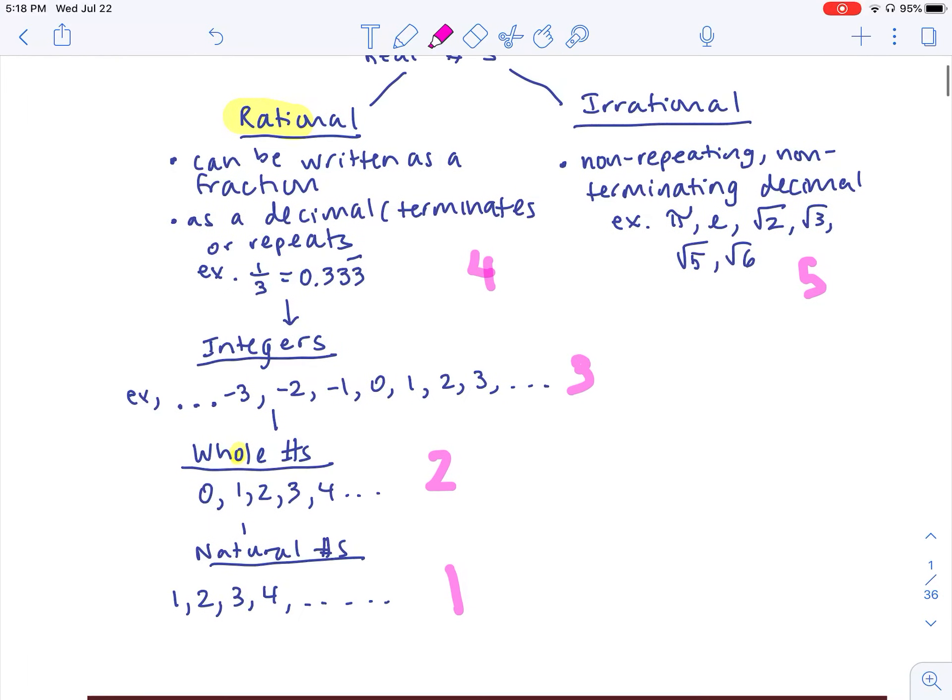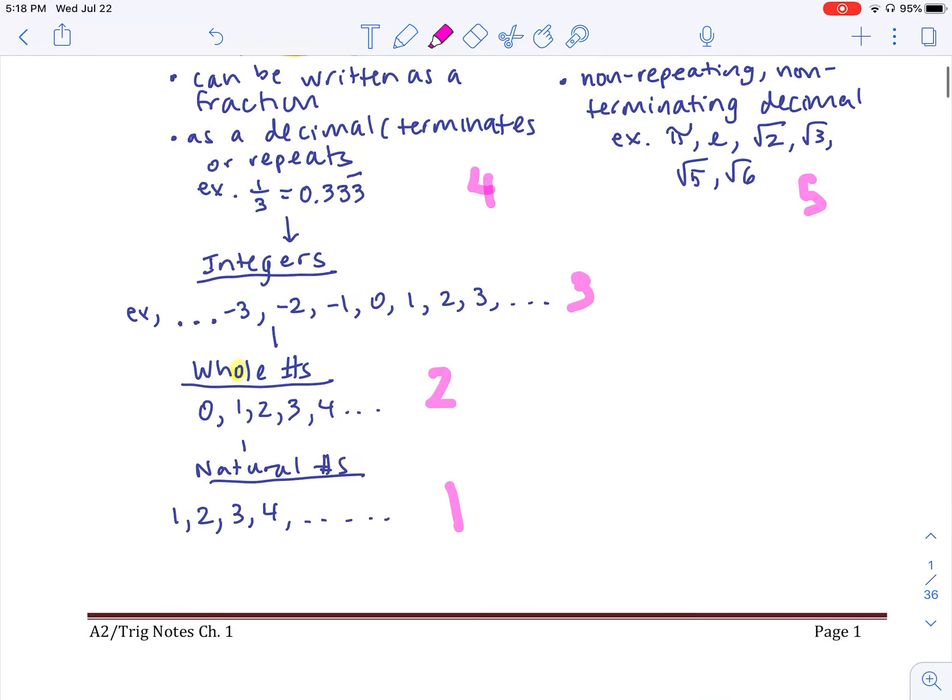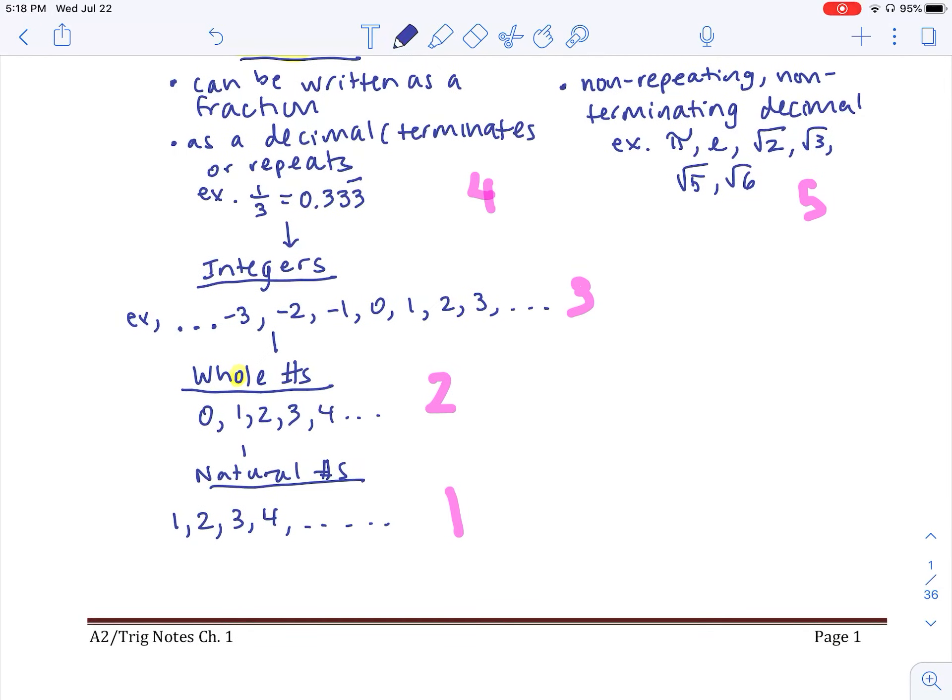You have real numbers are either rational or irrational. And if I'm talking about classifying a number like example number one, one-fourth, I would say this is a rational number as well as a real number. So if they asked for all classifications, you would provide all the categories that number falls into, including all the ones that are above it.